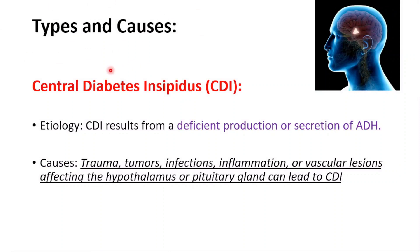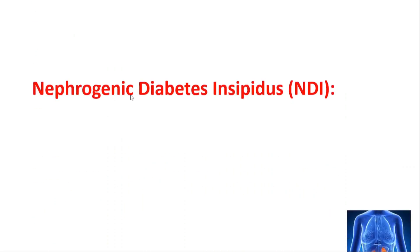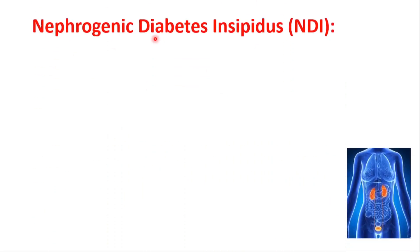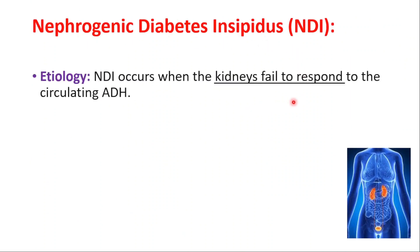Looking at the types and causes briefly: we have central diabetes insipidus, which is caused by deficient production or secretion of ADH. It can be caused by trauma, tumors, infections, inflammation, or vascular lesions affecting the hypothalamus or pituitary gland. The second type is nephrogenic diabetes insipidus, which is caused by the kidney failing to respond to circulating ADH.